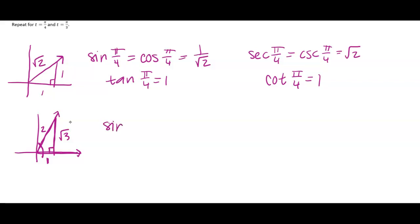So then I would write the sine of pi over 3, opposite over hypotenuse, cosine of pi over 3, adjacent over hypotenuse, tangent of pi over 3, opposite over adjacent.